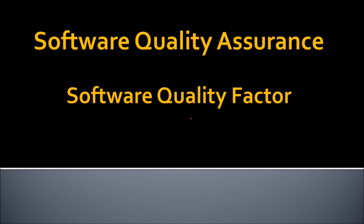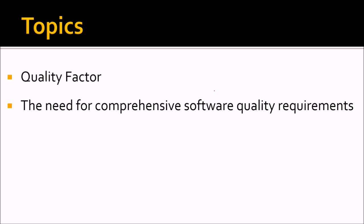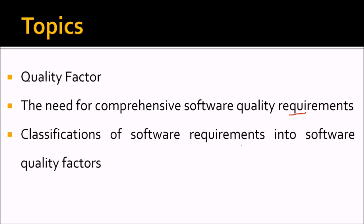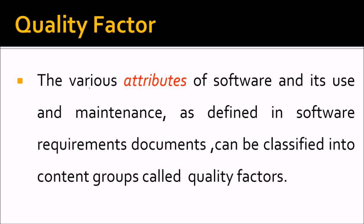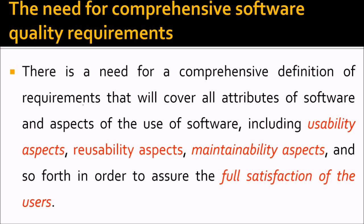In software quality assurance, we are discussing the software quality factor. The various attributes — characteristics of software and its use and maintenance — are defined in software requirement documents, often called SRS. These can be classified into content groups called quality factors. There is a need for a comprehensive definition of requirements.